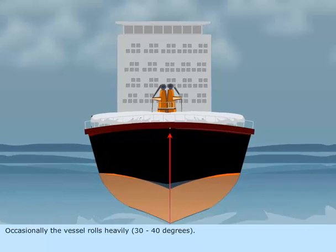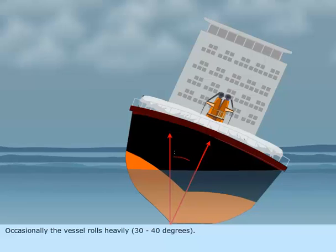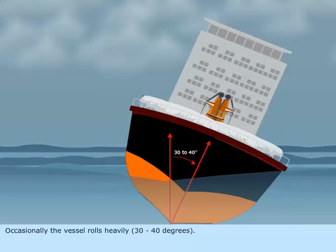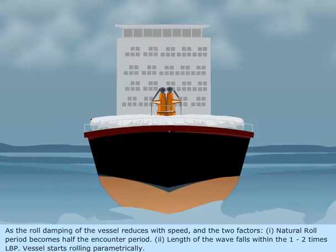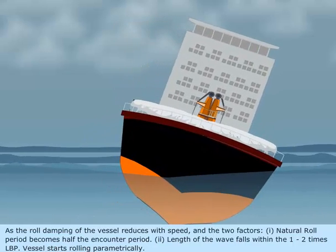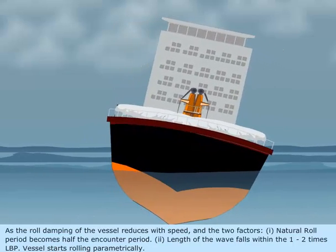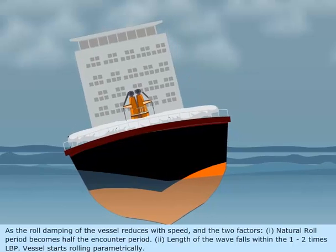Occasionally, the vessel rolls heavily 30 to 40 degrees. As the roll damping of the vessel reduces with speed and the two factors align: